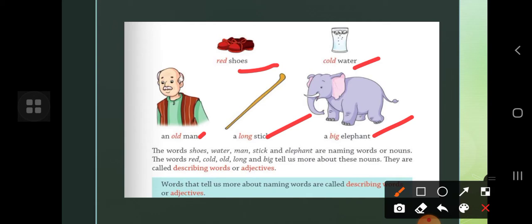The words red, cold, old, long, big tell us more about these nouns. Like red shoes, shoes are red. Cold water, water is cold. Old man, man is old. Stick is long, elephant is big.